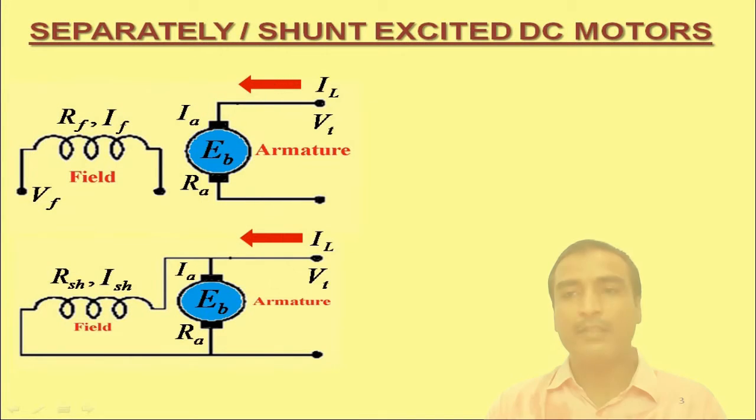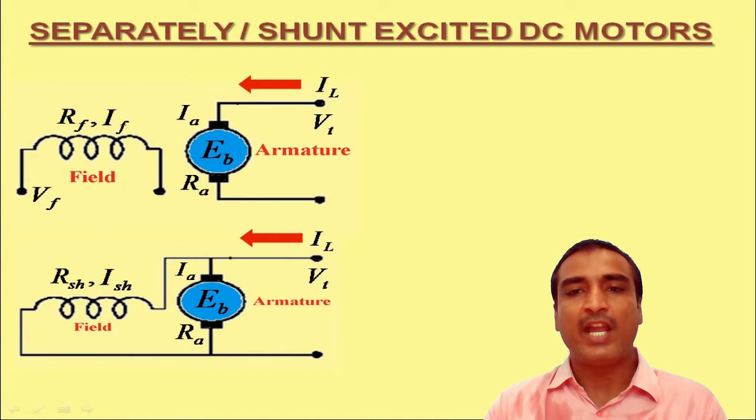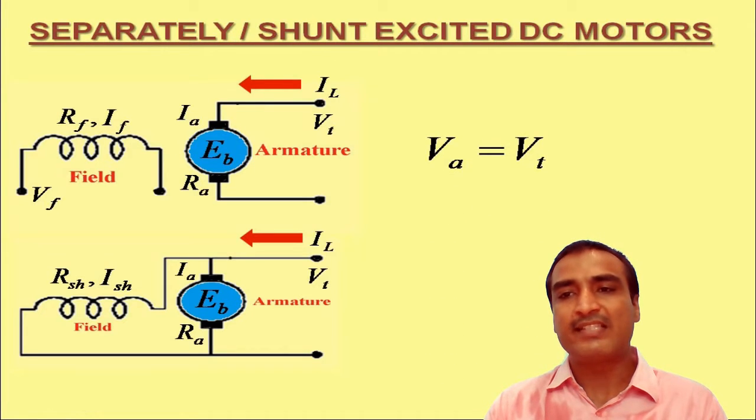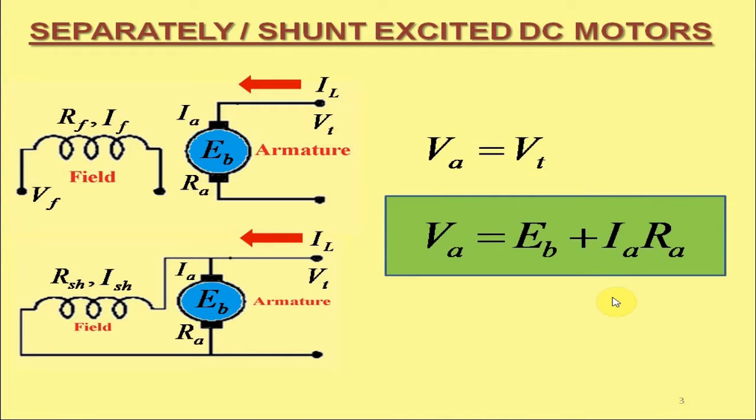Before establishing the condition for maximum mechanical power developed by the DC motor, first recall from my preceding video lecture that for both separately excited and shunt excited DC motors, we have the voltage across the armature ends, that is VA, being the same as that of terminal voltage VT. Consequently, the current voltage relationship for these two sorts of DC motors is typically expressed as VA is equal to EB plus IA RA.